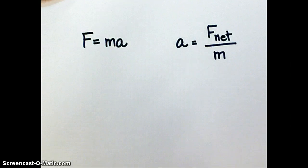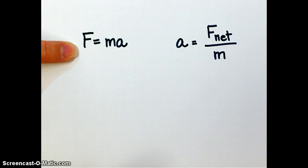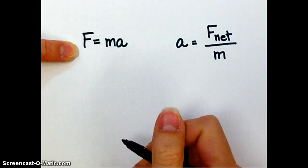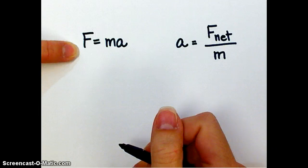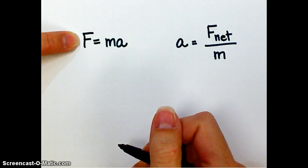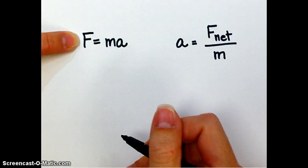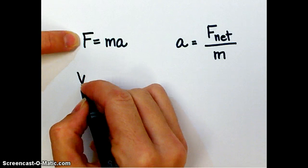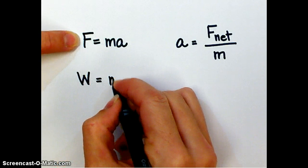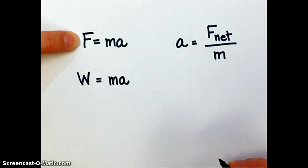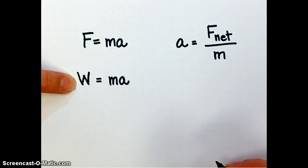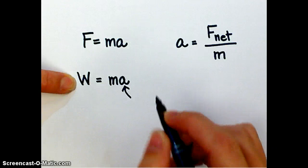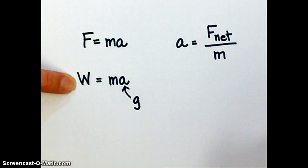But another thing we need to realize is that this formula is cleverly disguising another formula that's very similar to it, and actually means the same thing. If we consider force is equal to mass times acceleration, and we talk specifically about the force being a weight, we might write W instead of F. And if we talk specifically about acceleration due to gravity as the acceleration, then we might write G instead of A.